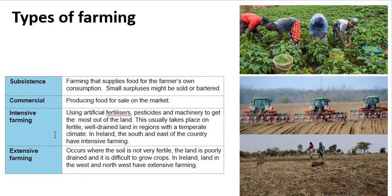Intensive farming is basically modern farming — using fancy machinery, artificial fertilizers, and pesticides to get the most out of the land. It's usually done in areas where the land is good and well-drained with a good temperate climate, like County Meath. The idea is that by spending money on machinery, fertilizer, and pesticides, you make farming as productive as possible — similar to using computers, PowerPoint, and online resources to make your education as productive as possible.